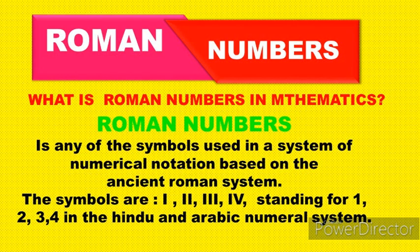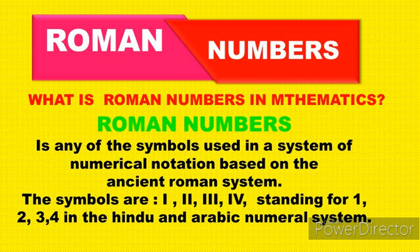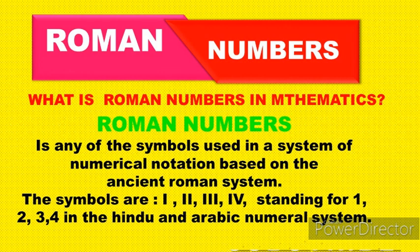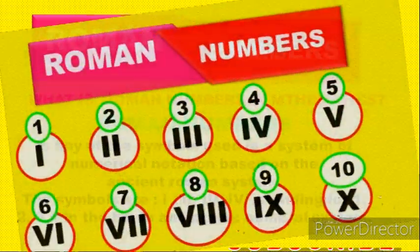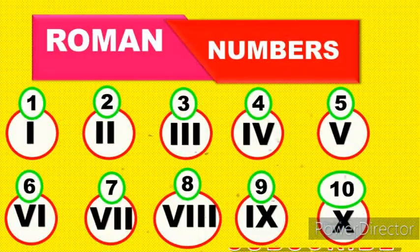The symbols that are used in Roman numerals are I, II, III, IV, standing for 1, 2, 3, 4 in the Hindu-Arabic numerical system.